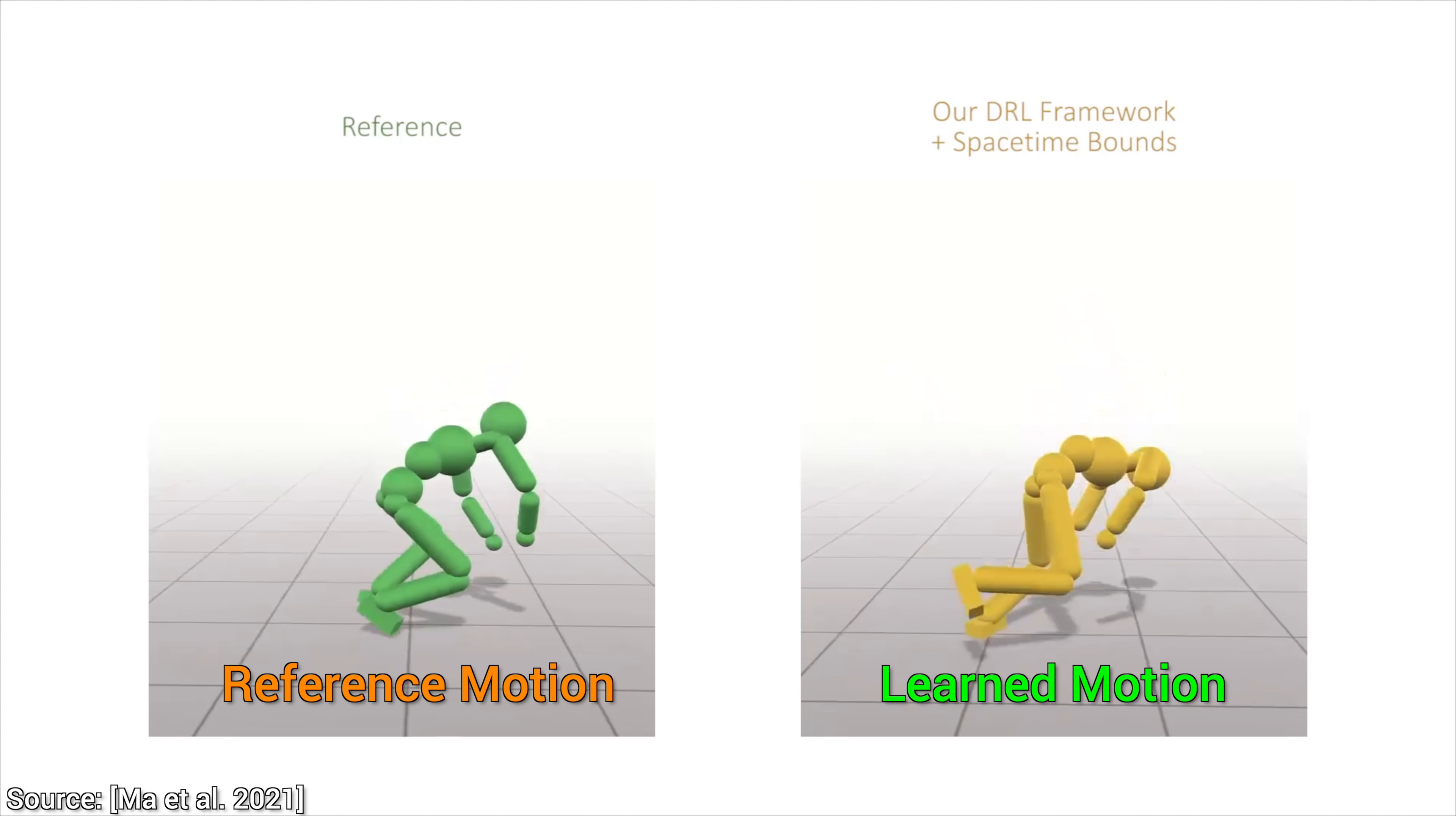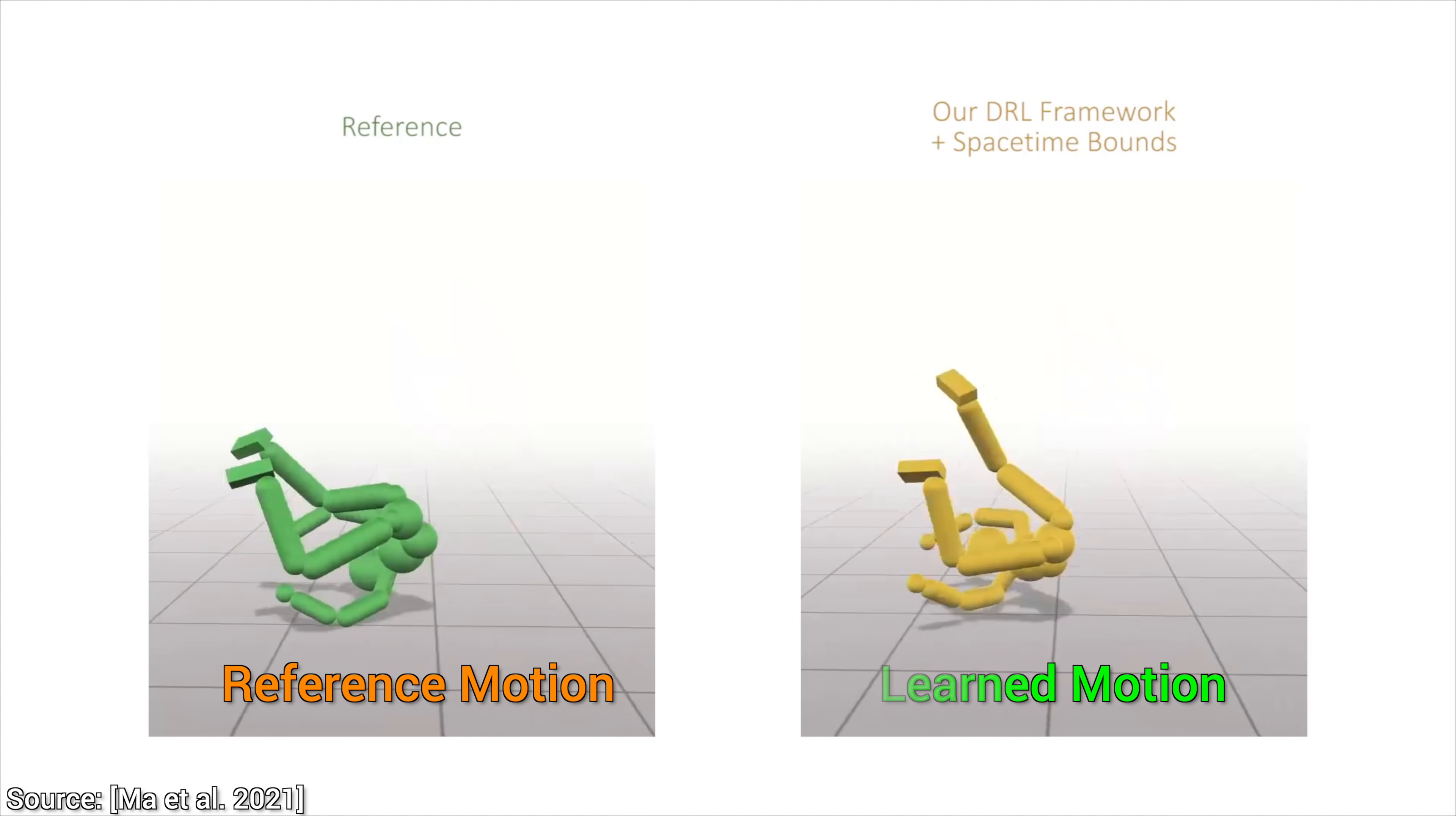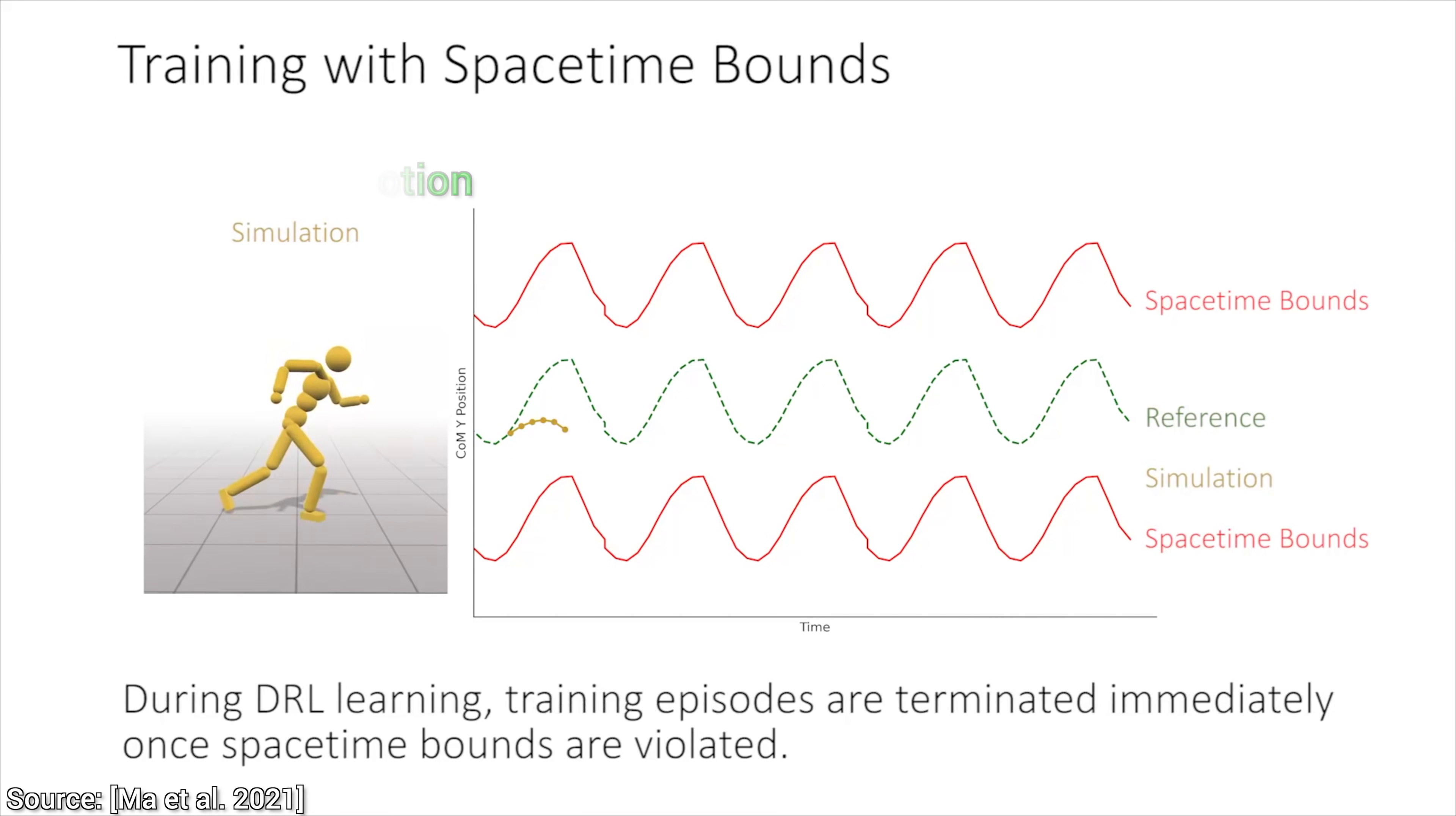So, how does all this magic happen? How do we imbue these virtual characters with style? Well, let's define style as creative deviation from the reference motion, so it can be different, but not too different, or else this happens.